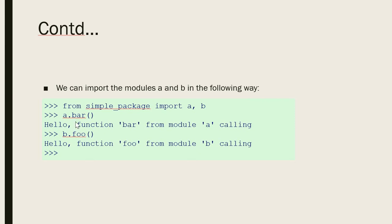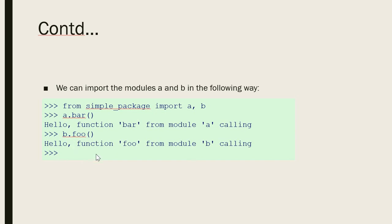We can import the modules a and b in the following way to get the correct output. From simple_package — the package name — we import modules a and b, which we have already created. We then call a.bar(), and the output will be the print statement from function bar inside a.py. Similarly, b.foo() is the method inside b.py, and calling it will give the expected output.